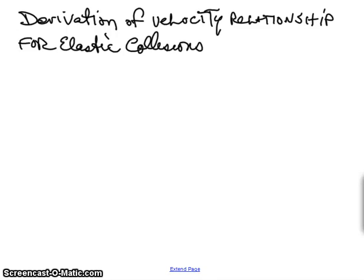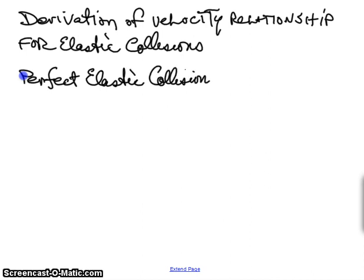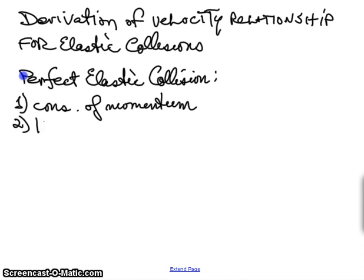I thought it might be worthwhile to show how the velocity relationship for elastic collisions works. In a perfect elastic collision, not only do you have the conservation of momentum equation working, which will allow you to solve for one unknown, but you also have the following relationship: the kinetic energy before the collision is equal to the kinetic energy after the collision. That's the requirement for a perfect elastic collision.